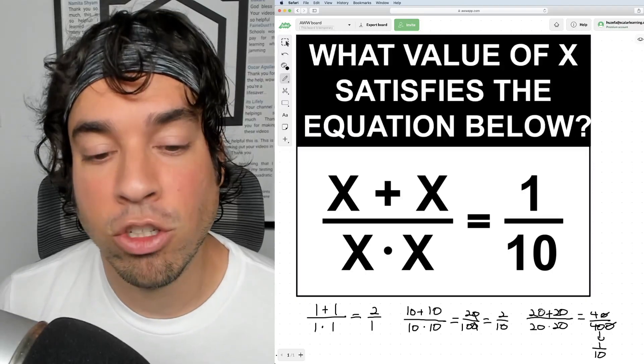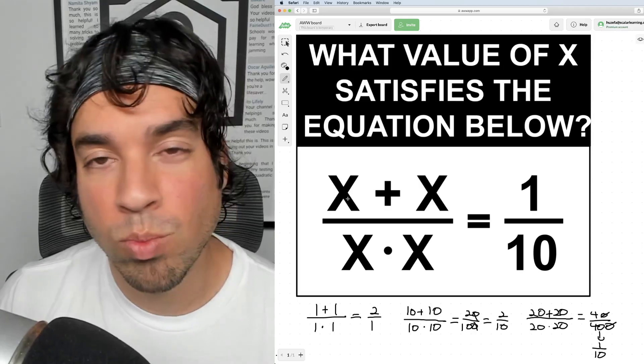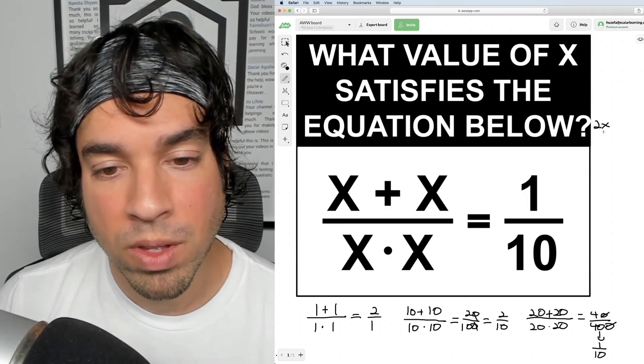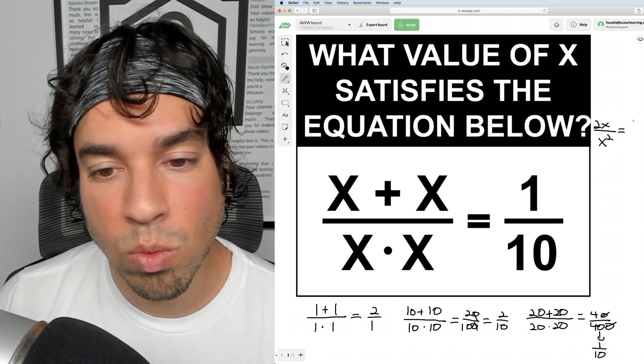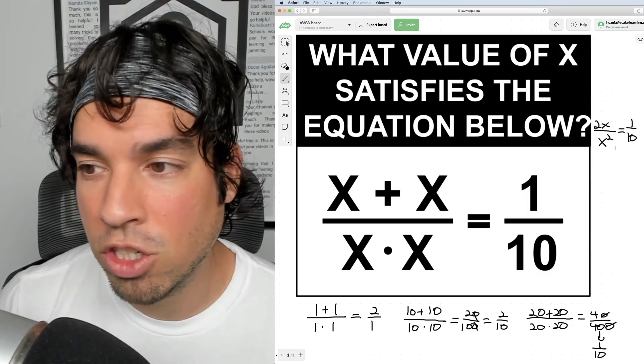Now let's talk about the algebraic approach. So what happens when it's x + x? That becomes 2x. And what about x · x? That becomes x². So we have 2x / x² = 1/10. Now we've got this nice equation here just like this.